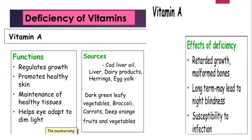Vitamin A deficiency causes night blindness — a child suffering from night blindness is unable to see in dim light. Symptoms include weak vision and difficulty seeing in dim light, which may lead to complete blindness. Sources include cod liver oil, dairy products, herring, and egg yolk. Vitamin A helps in maintaining healthy tissues, enhancing vision, providing resistance to infections, and keeping hair and skin healthy.